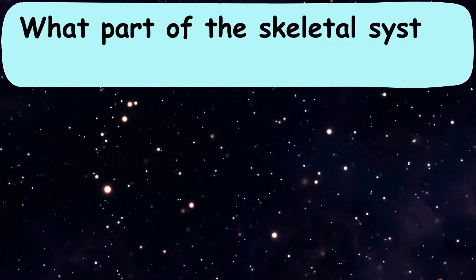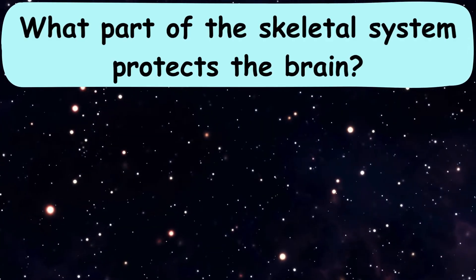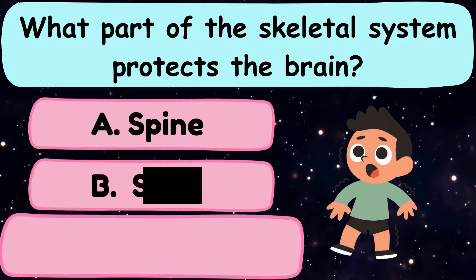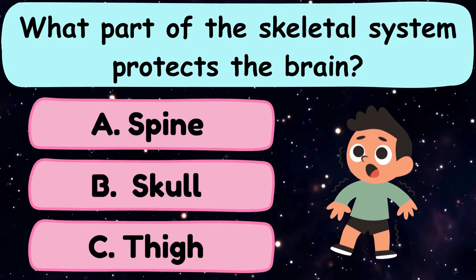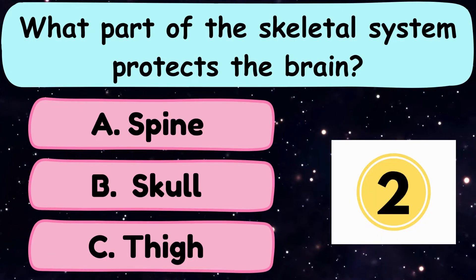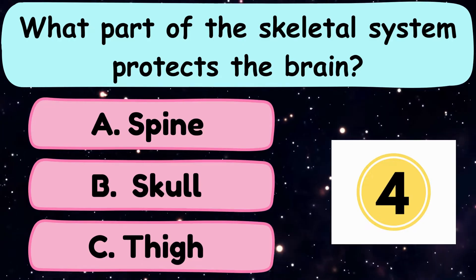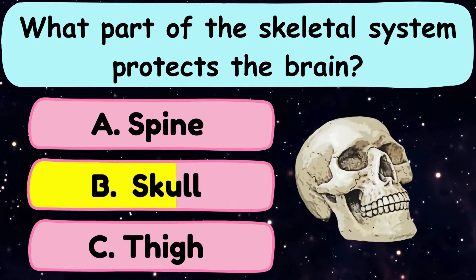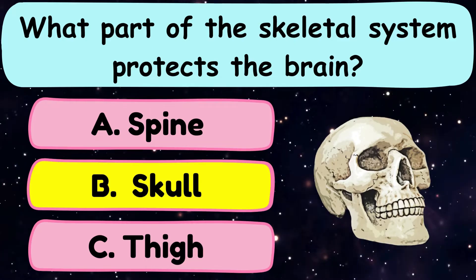Question number 1. What part of the skeletal system protects the brain? A. Spine, B. Skull, or C. Thigh. The correct answer is option B. Skull.